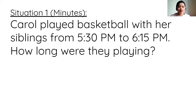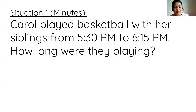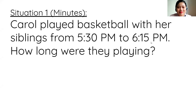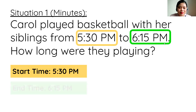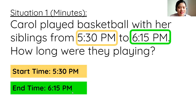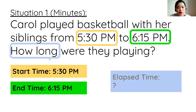The first situation is solving for elapsed time in minutes. Carol played basketball with her siblings from 5:30 PM to 6:15 PM. How long were they playing? It's important to know the start time and the end time. They started at 5:30 PM — that's the start time, marked in yellow. They finished playing at 6:15 PM — that's the end time, marked in green. We're looking for the time in between 5:30 and 6:15, the time that has passed — that's the elapsed time.